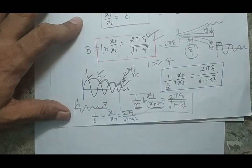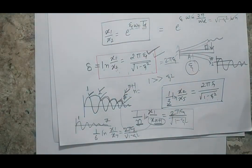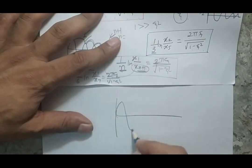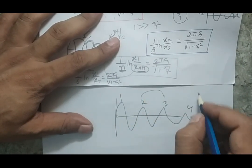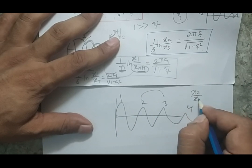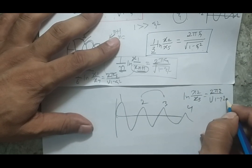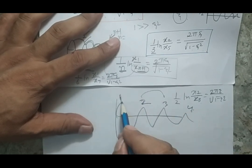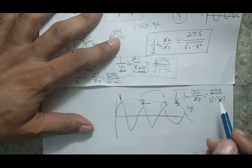For any two successive peaks — whether 1 and 2, 2 and 3, or 3 and 4 — the formula does not change, since the ratio of any two adjacent peaks gives the same value δ = 2πζ / √(1 − ζ²). But if you take peaks 2 and 4, then n = 2 and you use (1/2) in front. If you take peaks 1 and 4, there are three cycle jumps, so n = 3 and you use (1/3). Please keep this in mind.